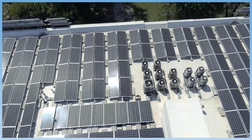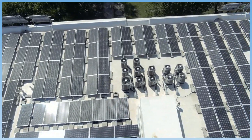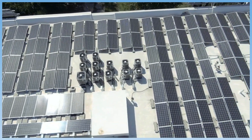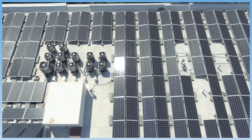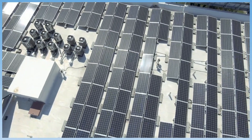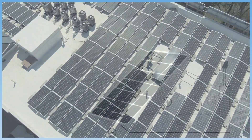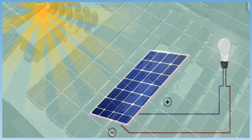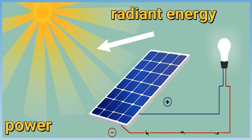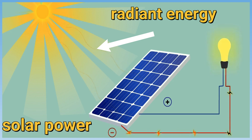Most solar panels are used to generate electricity. Solar panels that generate electricity are made of many small solar cells. These cells catch the radiant energy of the sun and turn it directly into electricity. This is called solar power.